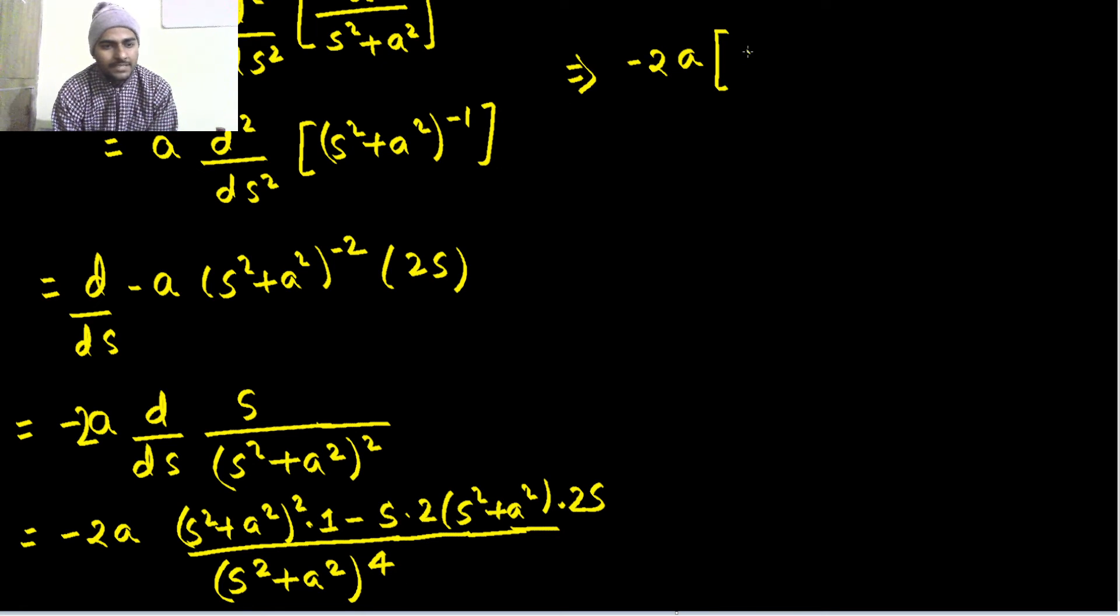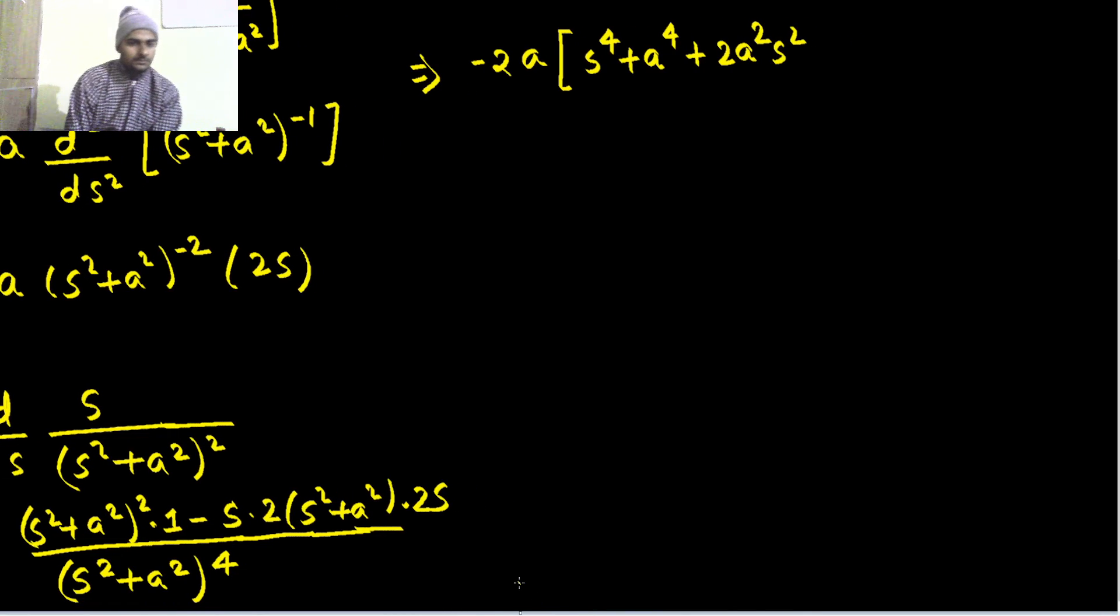So, on simplification, we can say this is s power 4 plus a power 4 plus 2 a square s square. And 2, 2, 4, 4, 4s square multiplied by s square. So, minus 4s power 4 and again, 4s square multiplied by a square.